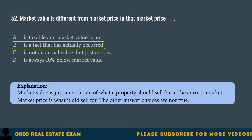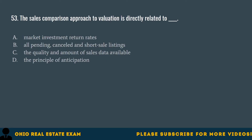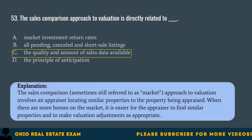Question 53. The sales comparison approach to valuation is directly related to... A. Market investment return rates. B. All pending, canceled, and short sale listings. C. The quality and amount of sales data available. D. The principle of anticipation. The correct answer is C. The quality and amount of sales data available. The sales comparison — sometimes still referred to as the market — approach to valuation involves an appraiser locating similar properties to the property being appraised. When there are more homes on the market, it is easier to find similar properties and make valuation adjustments.